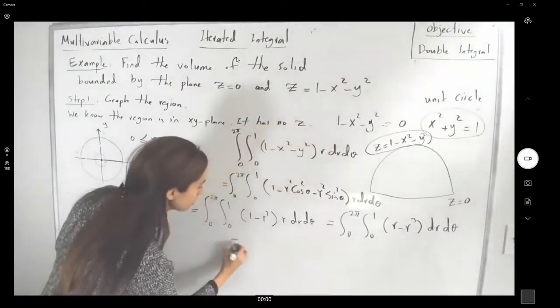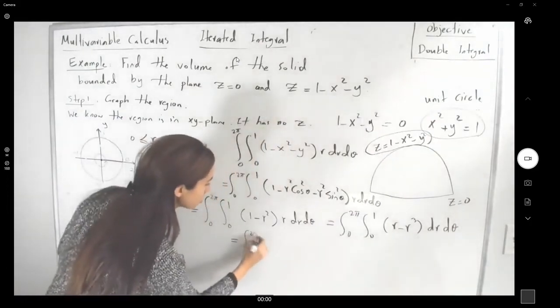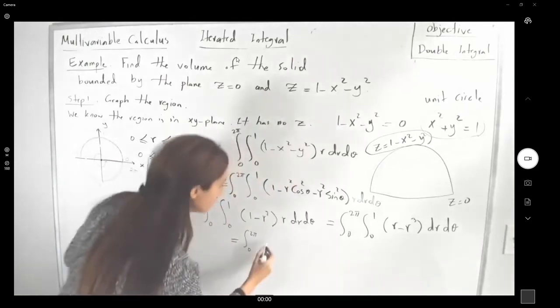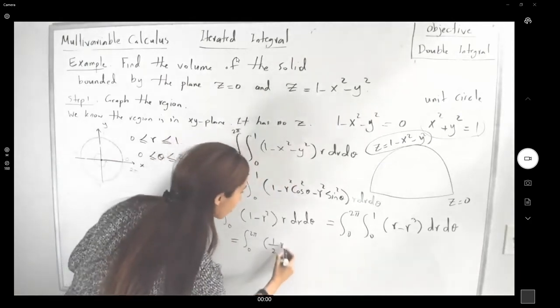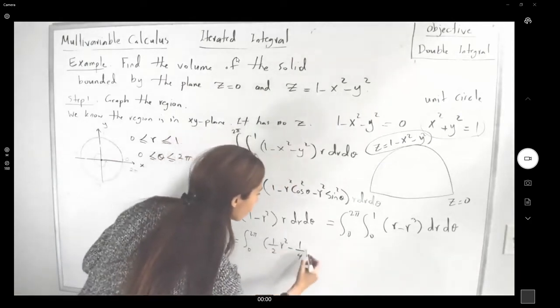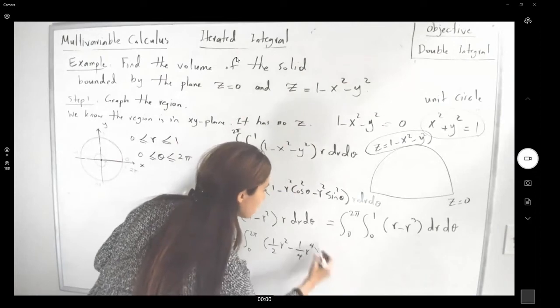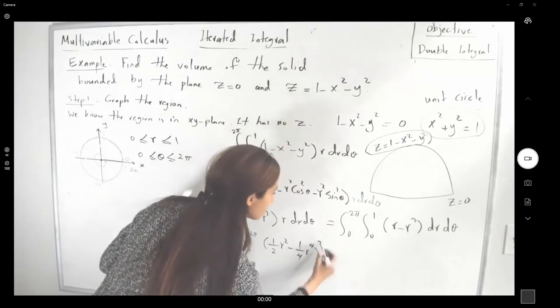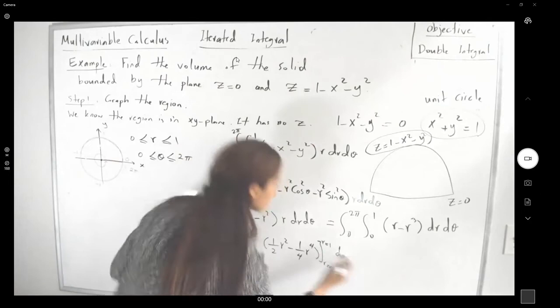Which is equal to integral 0 to 2π. So this guy is equal to the integral, r squared over 2 minus r to the 4 over 4, and r is between 0 to 1, d theta.